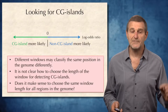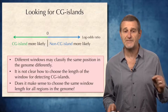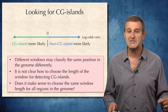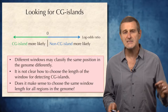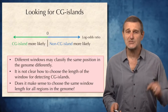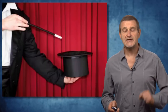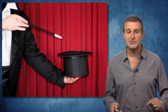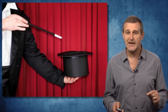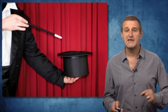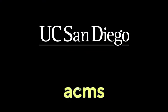However, as before, different windows may classify the same genomic position differently, it is unclear how to choose the window length, and importantly, it is not clear whether the same window length should be used across different genomic regions. In the next section, I will describe hidden Markov models, which provide a better paradigm for problems like finding CG islands and many other problems in bioinformatics.